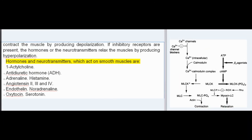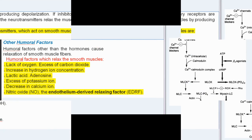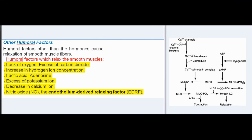Hormones and neurotransmitters which act on smooth muscles are: acetylcholine, antidiuretic hormone (ADH), adrenaline, histamine, angiotensin, endothelin, noradrenaline, oxytocin, and serotonin.